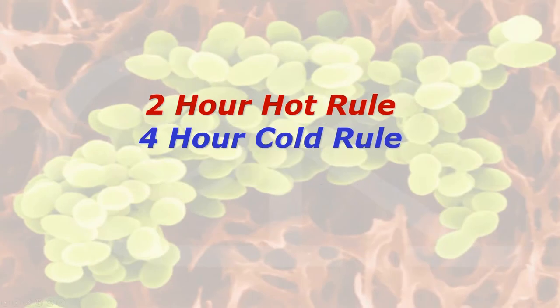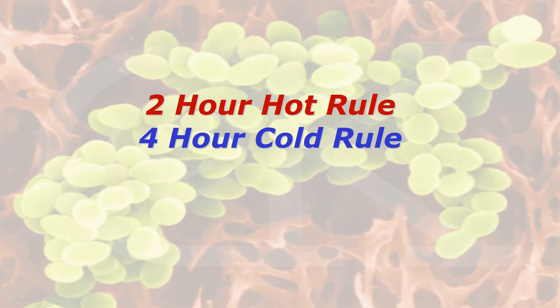There is also the two-hour hot rule and the four-hour cold rule. The two-hour hot rule: all food served hot must be held at 63 degrees C or above. If the food drops below 63 degrees — say the equipment breaks down — you have two hours to sell that food, or you can cool it down, chill it, and use it the next day as a chilled product but not reheat it.